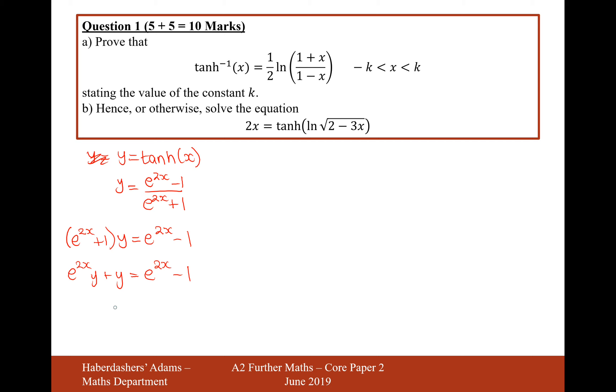So e to the 2x y plus y equals e to the 2x minus 1. What I think I'll do now is I'll group all my x's on one side, so I'll make it y plus 1 on the left and e to the 2x minus e to the 2x y on this side. Let's now factorise out the e to the 2x on the right-hand side.